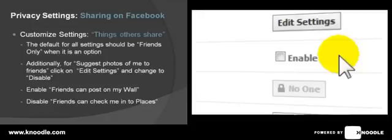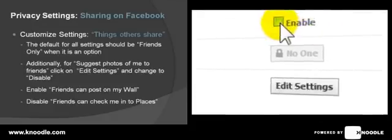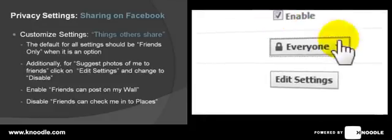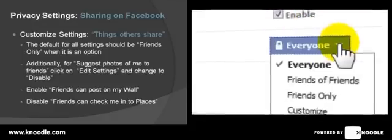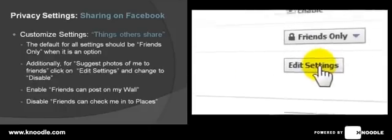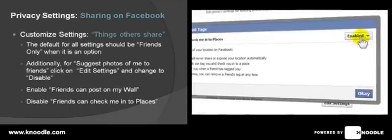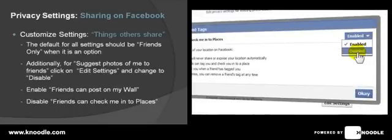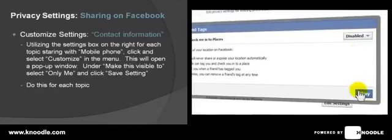If you're happy for your friends to post on your wall, click 'Enable,' then click the next button and change that to 'Friends Only.' The final one in this section — 'Friends Can Check Me In to Places' — click on 'Edit Settings' and change that from 'Enabled' to 'Disabled,' then click OK.